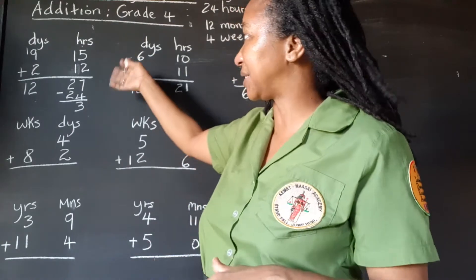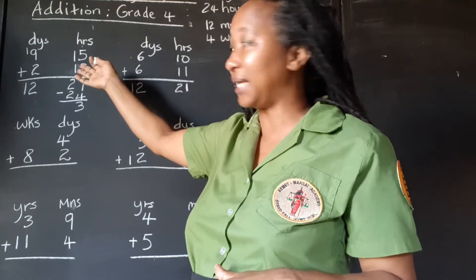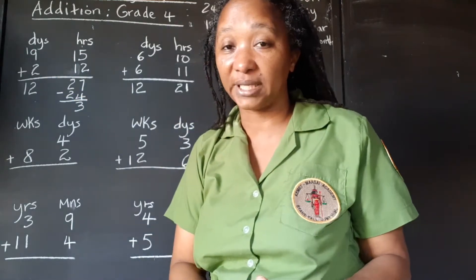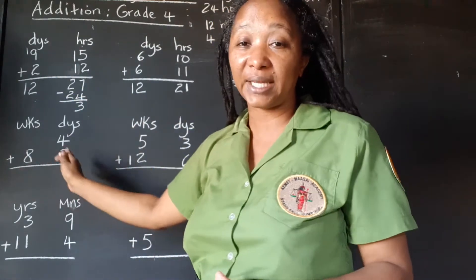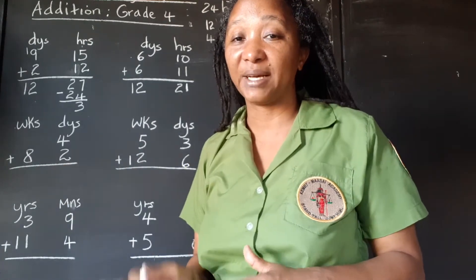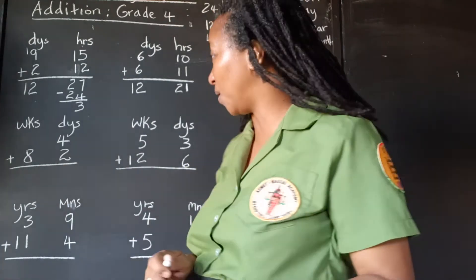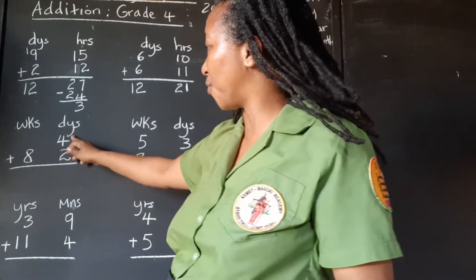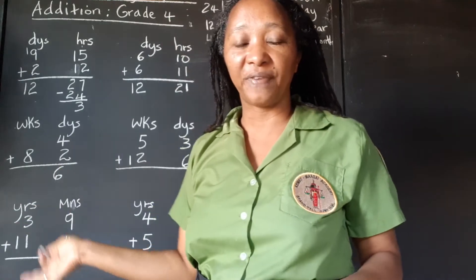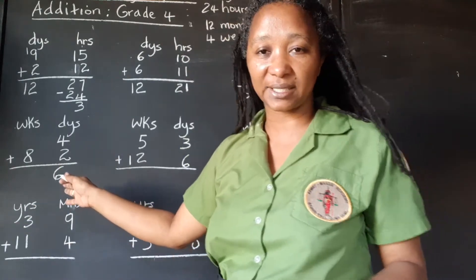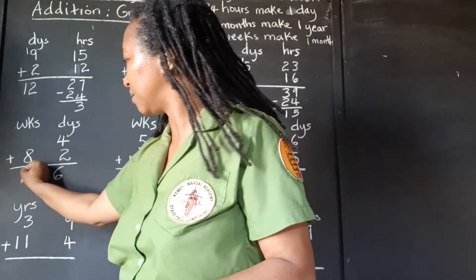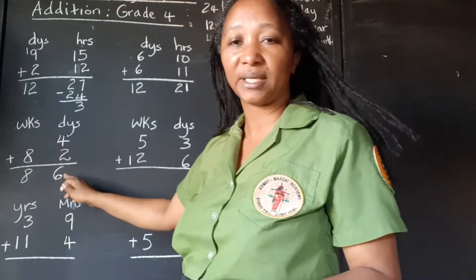It's the same principle — just that with hours and days it was 24 we were focusing on, now with the weeks and days we're focusing on 7, because 7 days make one week. So when we add 4 days and 2 days, we get 6, and that's perfectly fine. We can leave the 6 — so that's 8 weeks and 6 days.